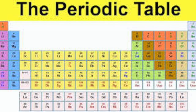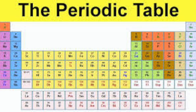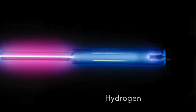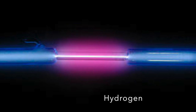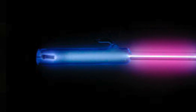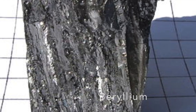An element is a material made out of only one type of atom. There are many examples of elements. For example, hydrogen, helium, carbon, and oxygen are some just to name a few.